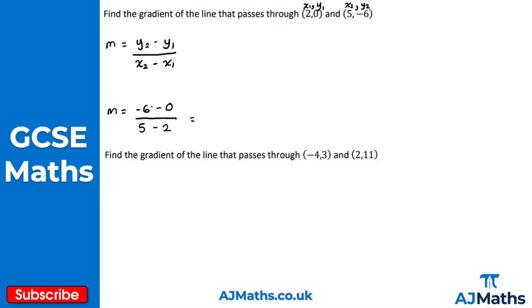Simplifying: minus 6 minus 0 gives minus 6, and 5 minus 2 gives 3. So we get minus 6 over 3, which simplifies to minus 2. The gradient for the first question is minus 2.